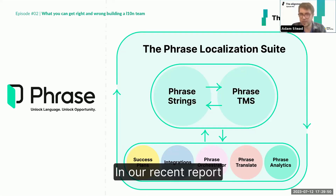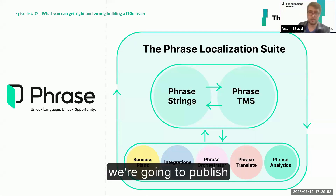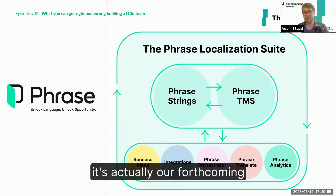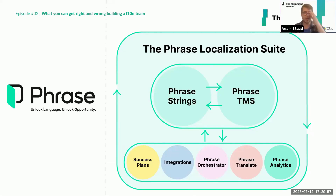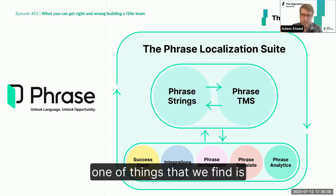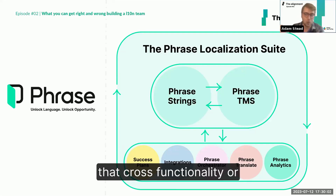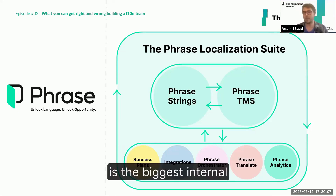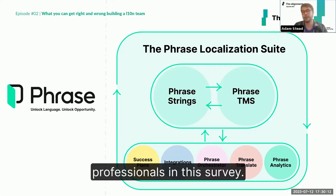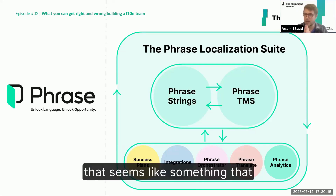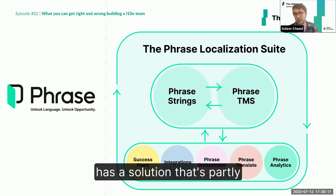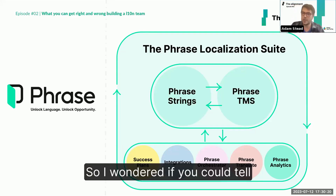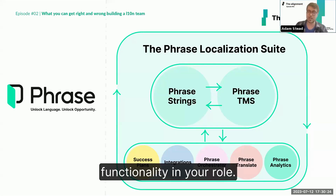In our forthcoming report, one of the things we find is that cross-functionality — working cross-functionally across all different stakeholder groups and teams — is the biggest internal pain point for localization professionals surveyed. To me, that seems like something that has a solution partly answered by tooling. Could you tell us a little bit about how Phrase thinks about cross-functionality in your role?